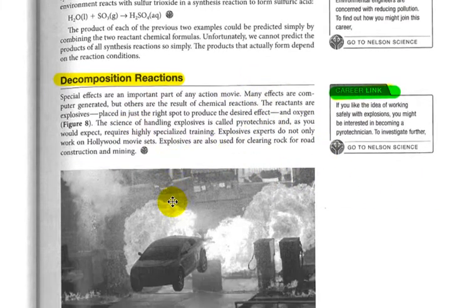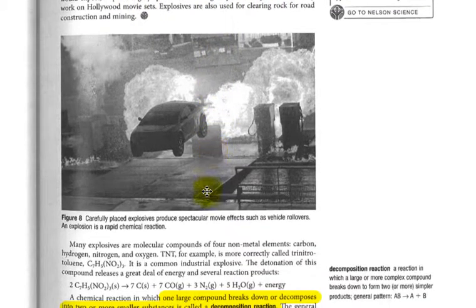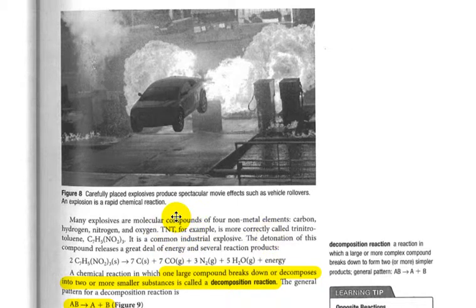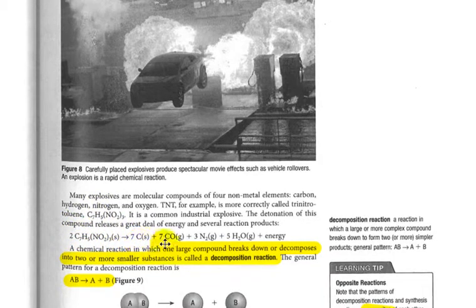A lot of movies now use computer-generated effects, but quite often there's still some real-life explosives that are used, and they are basically decomposition reactions. For example, TNT, trinitrotoluene, C7H5N O2 all in brackets three, is a decomposition reaction. A little bit of energy is supplied and it breaks down into carbon, carbon monoxide, nitrogen, water, and a huge amount of energy.